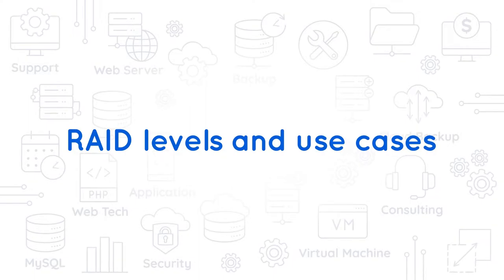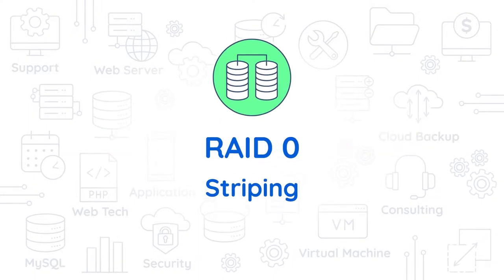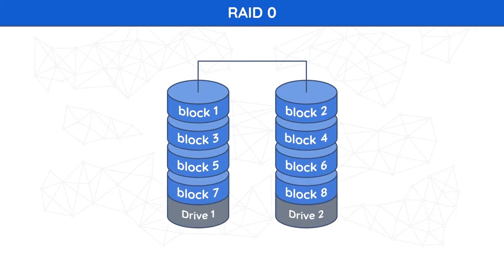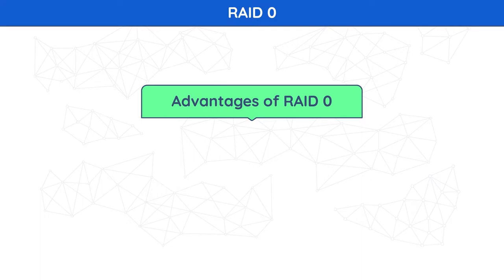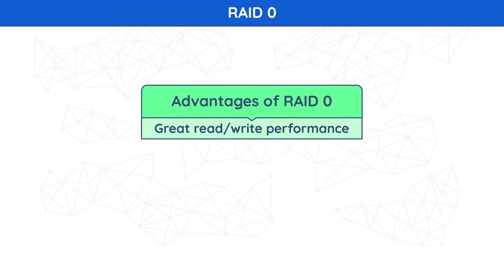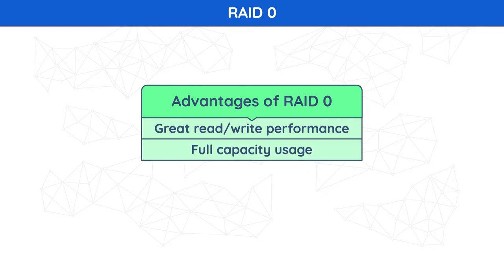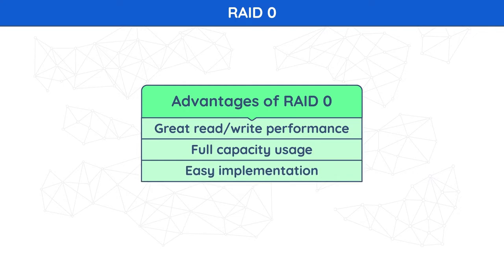RAID 0 — Striping. In a RAID 0 system, data is split up into blocks that get written across all the drives in the array. By using multiple disks starting with two at the same time, this offers superior I/O performance. The advantages of RAID 0: great performance in both read and write operations, no overhead caused by parity controls, all storage capacity is used, and the technology is easy to implement.